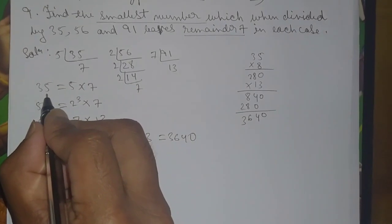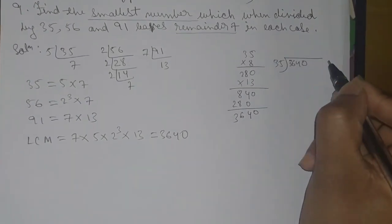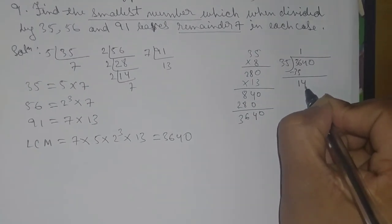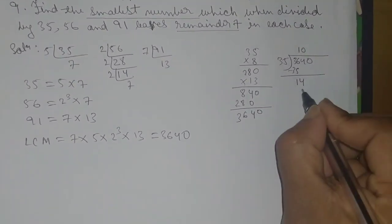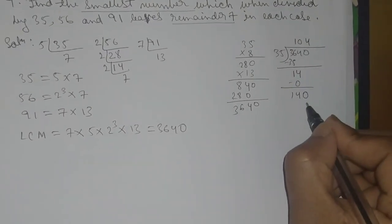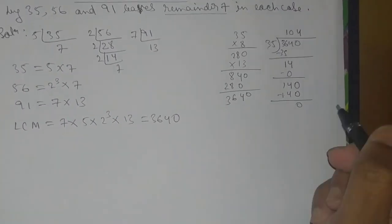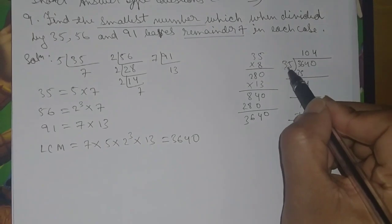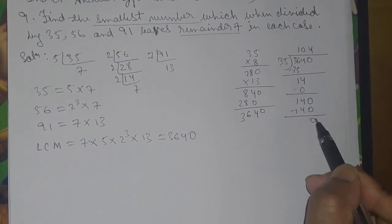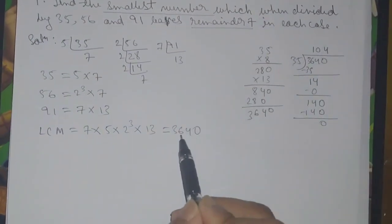Checking: three thousand six hundred and forty divided by 35 — 35 into 104 is 3640, remainder zero. So 3640 is exactly divisible by 35, but we need remainder 7. Therefore, the required number is 3640 plus 7.